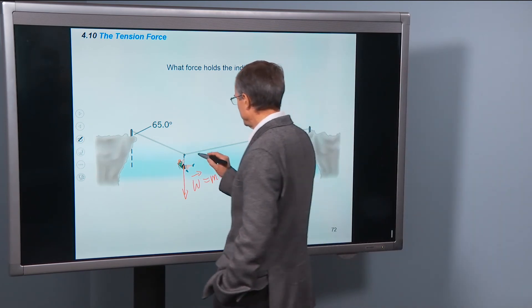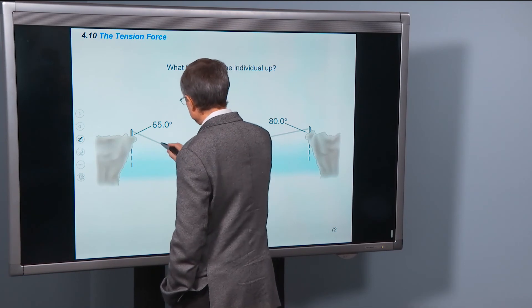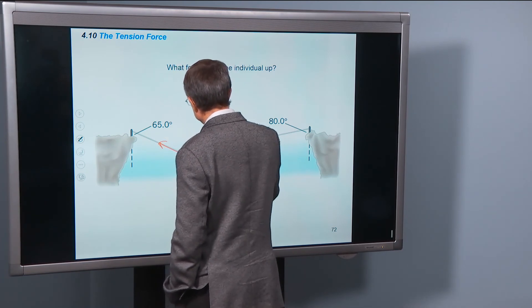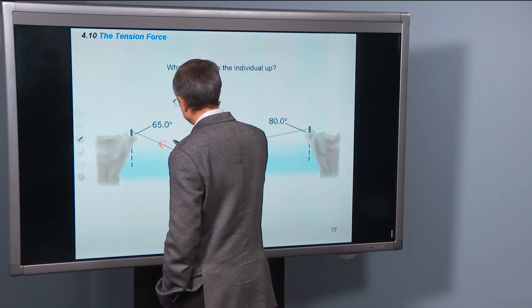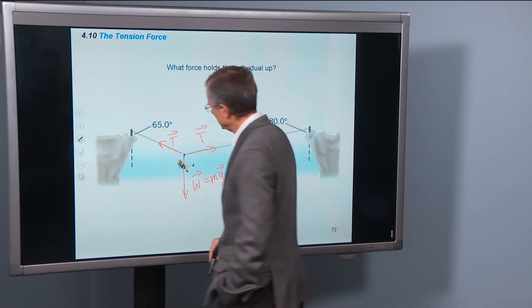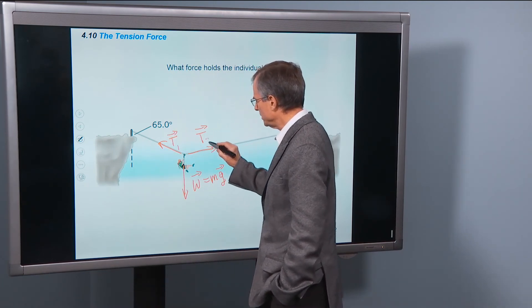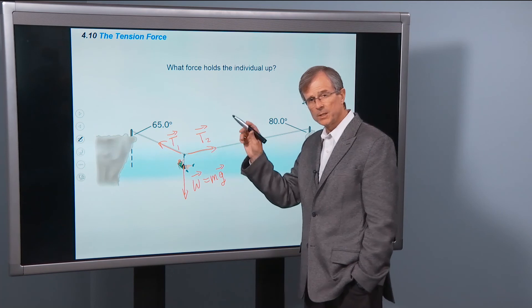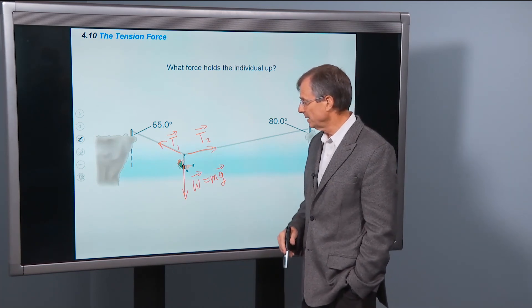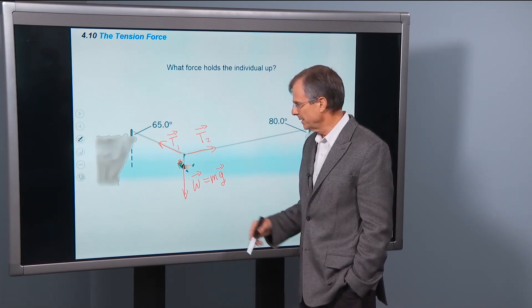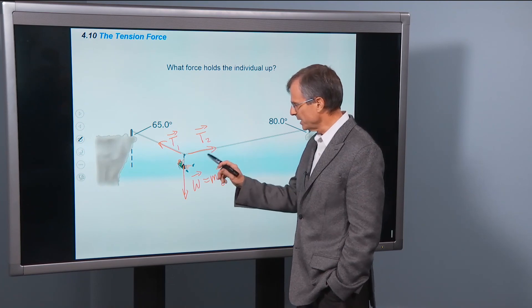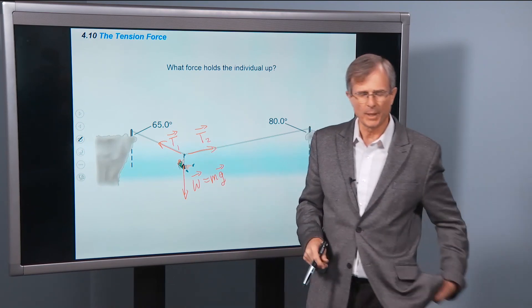Her weight is pulling her down. What's holding her up? You're right. There's a tension force here and a tension force here. Two tension forces. Let's just call them T1 and T2. And when you balance all these forces out, you're going to have to get a situation where there's enough tension force to hold her up to counterbalance gravity.